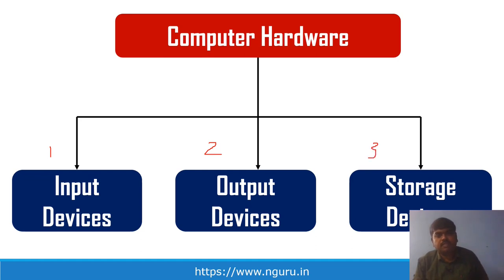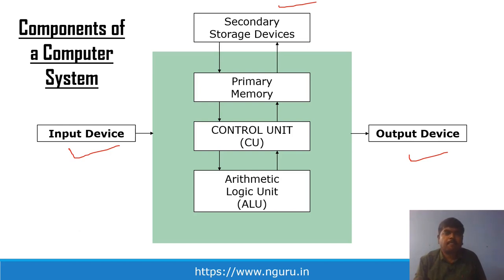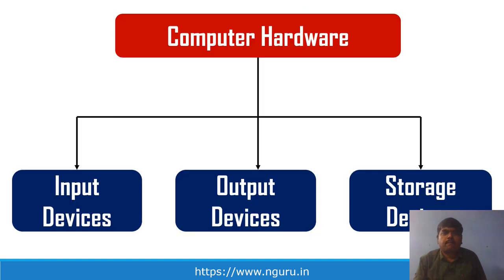Yesterday we saw the block diagram of the computer, which has input devices, output devices, and CPU in between. We will be talking about input devices, output devices, and storage devices in detail. Computer hardware has been broadly divided into input devices, output devices, and storage devices.